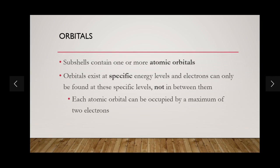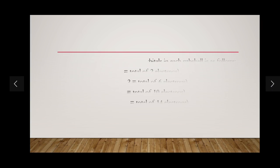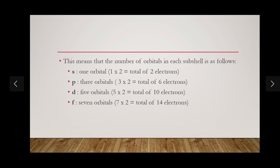Orbitals exist at specific energy levels, and electrons will only be found at these specific levels and not in between them. The orbitals are present in the subshells, and electrons will only be found in these orbitals. Each atomic orbital can be occupied by a maximum of two electrons — that's a very important point.